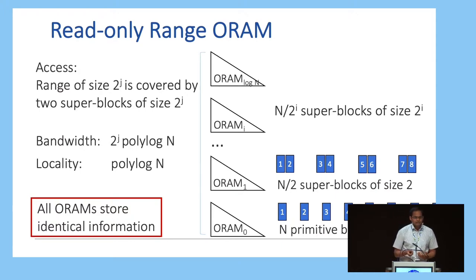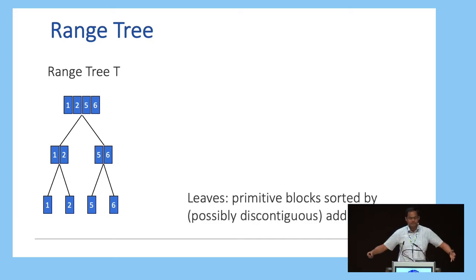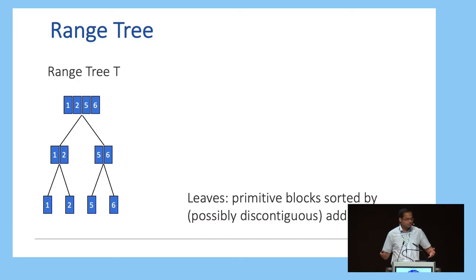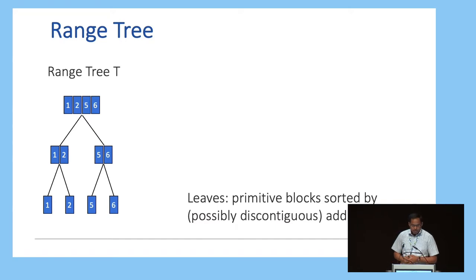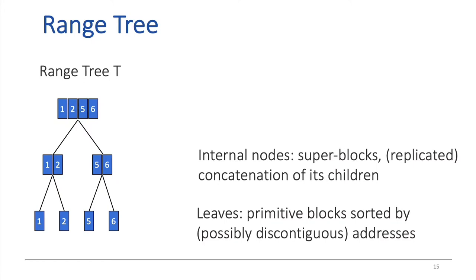In order to support writes, we use a slightly generalized data structure called a range tree. A range tree is a tree where the leaves are the primitive blocks sorted by addresses. The distinction from before is that these leaves could contain discontinuous blocks — for example, blocks 1, 2, 5, and 6, where blocks 3 and 4 are not there. Every internal node has superblocks which are a concatenation of its children, and they are replicated. Looking ahead, each of these levels will be stored in different ORAMs.